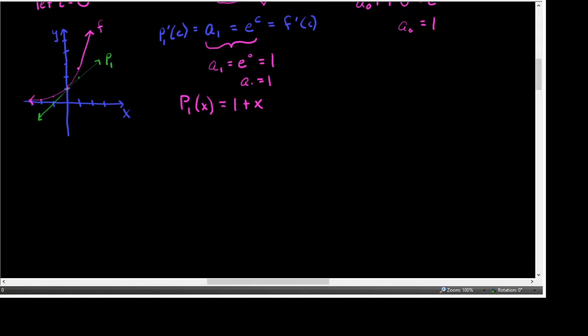The third requirement we might want to make is not only do we want their first derivatives to be the same number at C, we would like their second derivatives at C to be the same. As it turns out, the level of the derivative is the power of X we're going to use — so when we equated the first derivatives, we were doing that with a linear equation, X to the first. So let me set up our degree two polynomial.